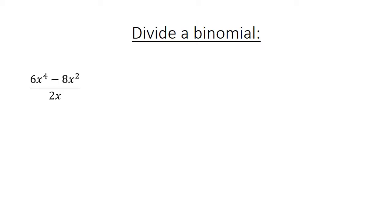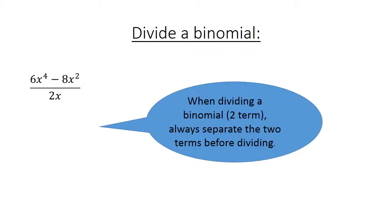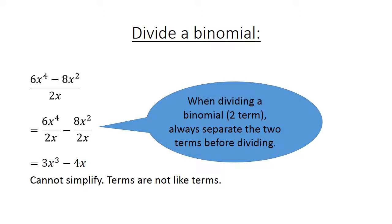Divide a binomial — we have a binomial on top divided by a monomial: 6x to the power of 4 minus 8x to the power of 2 divided by 2x. When dividing a binomial, always separate the two terms before dividing. So: 6x⁴ divided by 2x minus 8x² divided by 2x equals 3x to the power of 3 minus 4x. We cannot simplify further — the terms are not like terms.